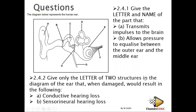Give only the letter of two structures in the diagram that, when damaged, would result in conductive hearing loss and sensorineural hearing loss. Sensorineural is basically about the sensory neurons — that is E and F. Conductive is about the material that conducts the vibration — that is B and C.